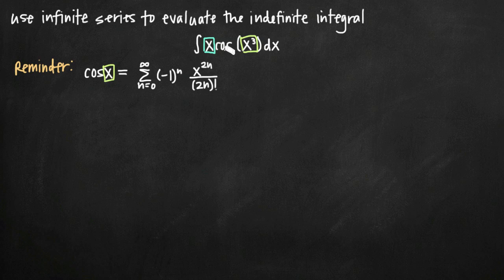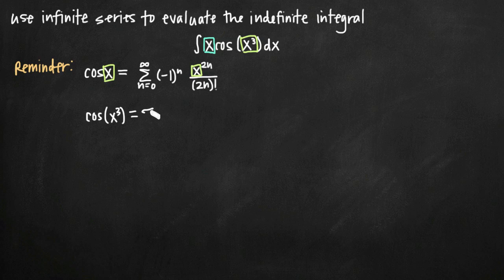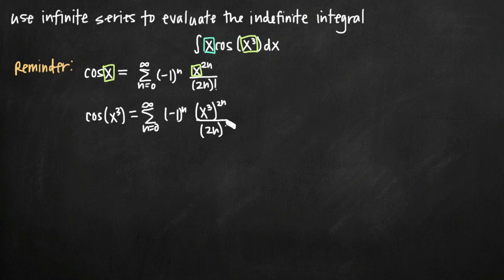In order to deal with x cubed, all we need to do is find the x value inside our infinite series and swap it out for x cubed. You can see in our infinite series the only x value is right here — we need to switch it out for x cubed. So cosine of x cubed equals the infinite series from n equals zero to infinity of negative one raised to the n, with x cubed plugged in, raised to the 2n, divided by the quantity 2n factorial.